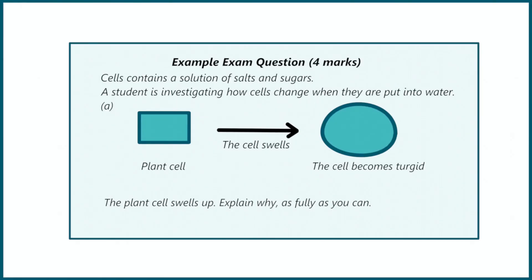You could also get a harder scenario exam question worth up to four marks. For example they could give you a cell and ask you to explain why it looks the way it did. For this question you often get a mark just for mentioning the word osmosis, so if you think water is involved in a question always use the word osmosis. You would also get a mark for recognising where the water has moved from and to — in this case, water has moved from the outside of the cell to the inside. You also get a mark for saying the water moves across a partially permeable membrane.